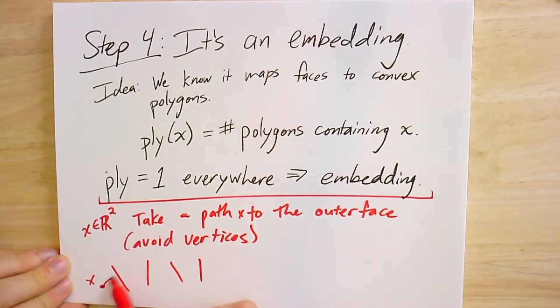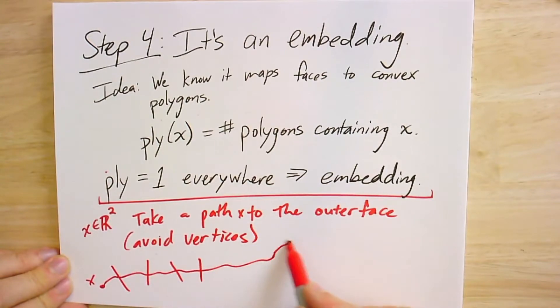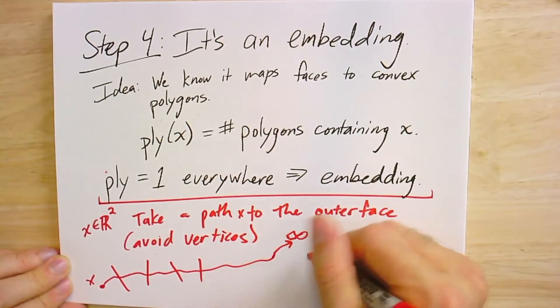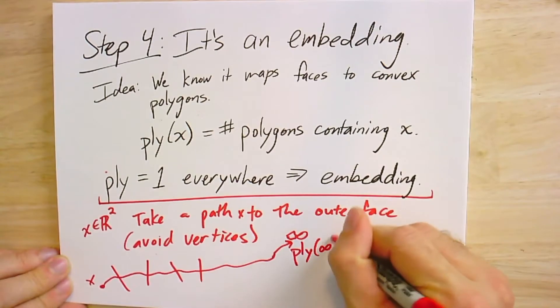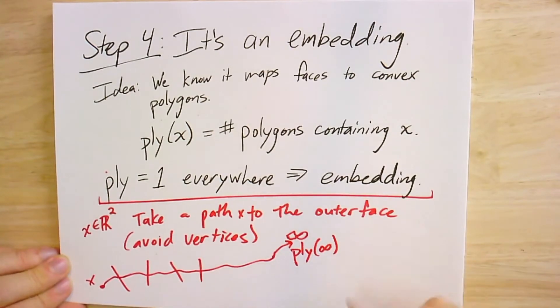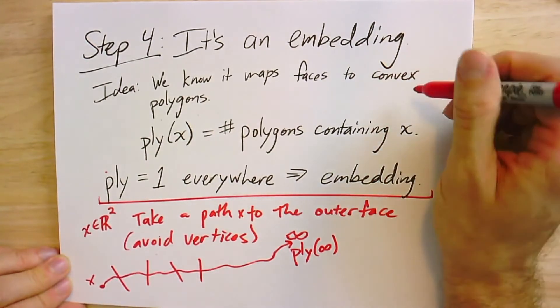Imagine the edges laid out here with point x. As I walk out to the outer face, somewhere at infinity, every time I cross an edge I leave one polygon and enter another. So the ply stays constant. At infinity, once you get far enough out, the only face you're in is the outer face.